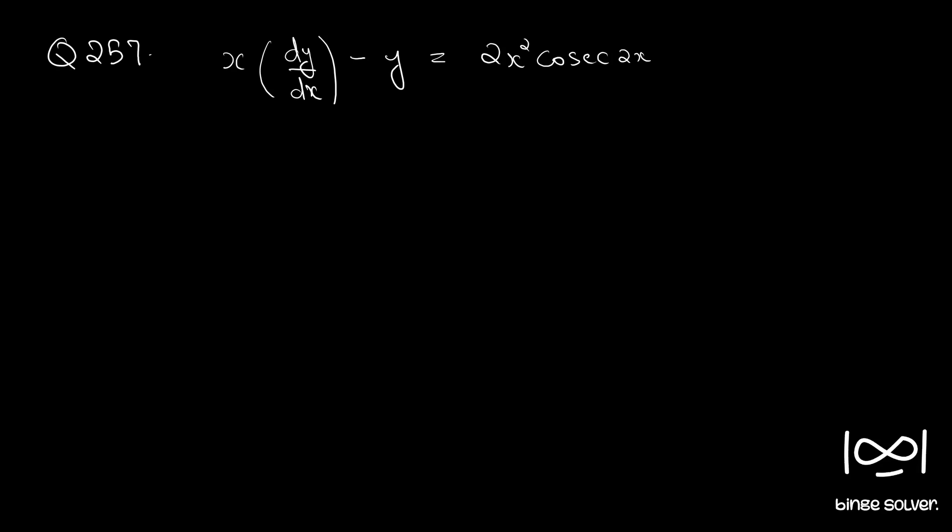Question number 257: x into dy by dx minus y equal to 2x square cosec 2x.